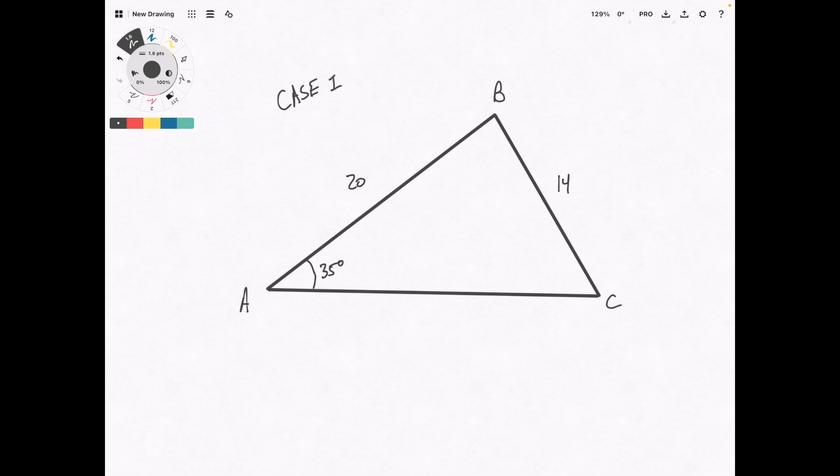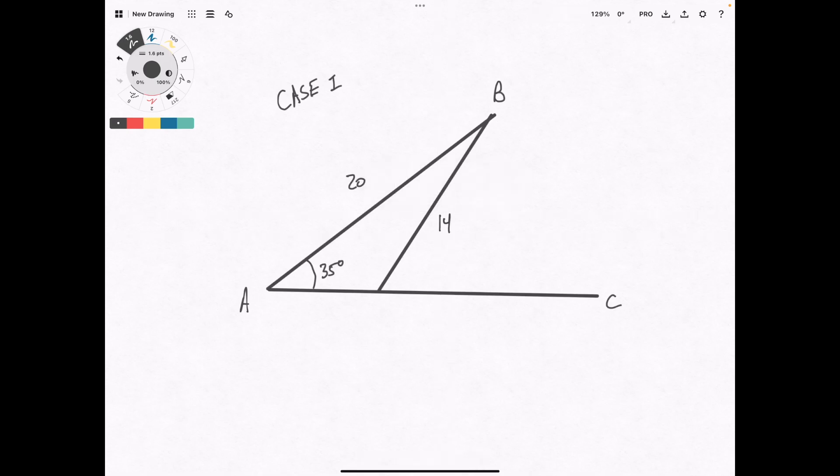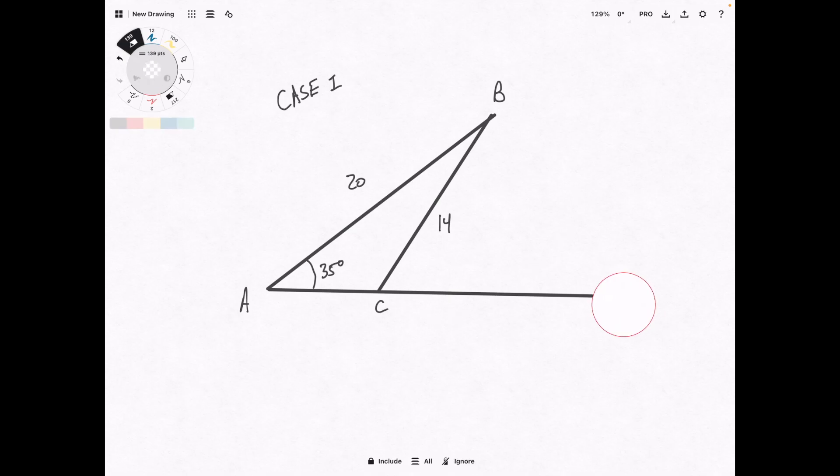Case two, if you pay attention, we can take this side at fixed length and swing it around and put it here. So it's still length 14, but we've revolved it around from over here and put it in a new spot. So C is not here. Actually get rid of this entire thing. So this is case two.